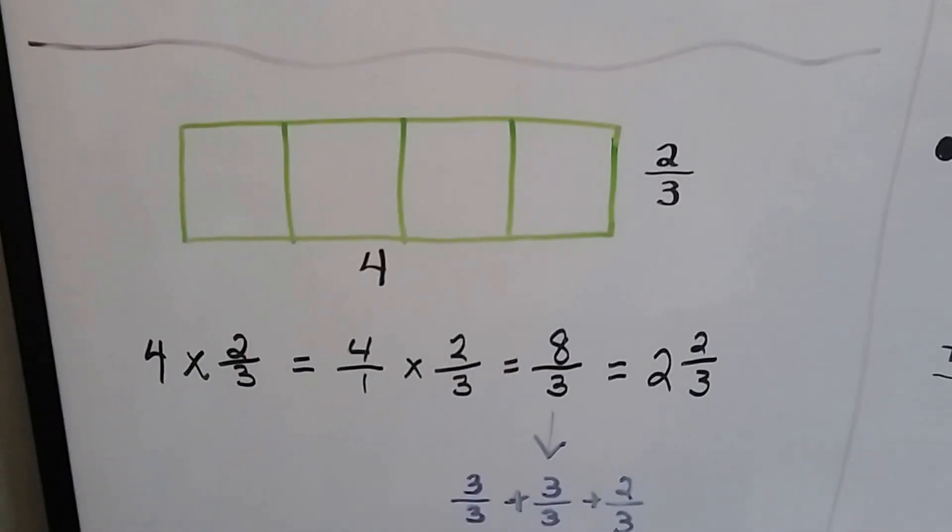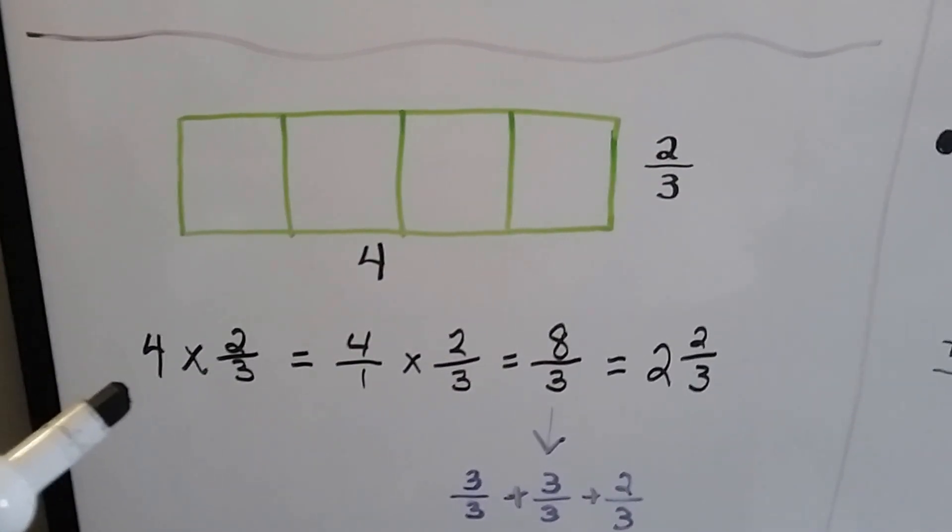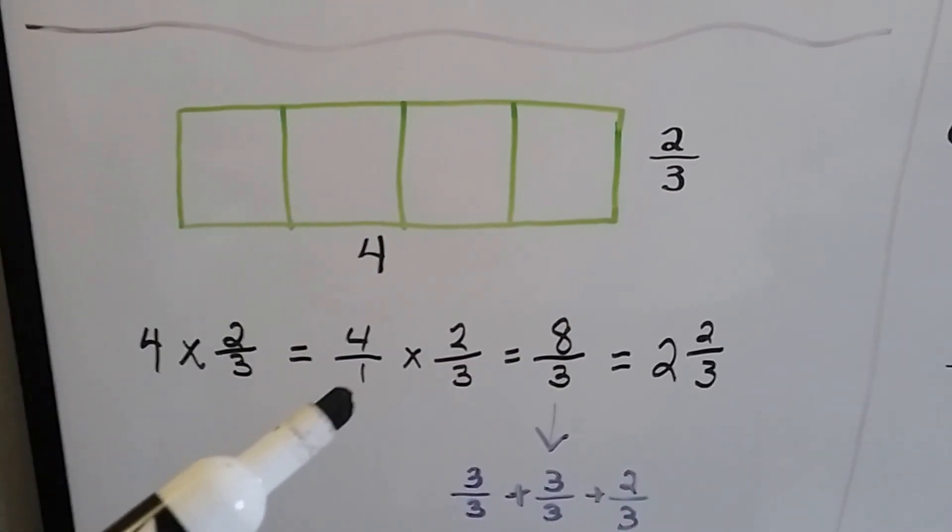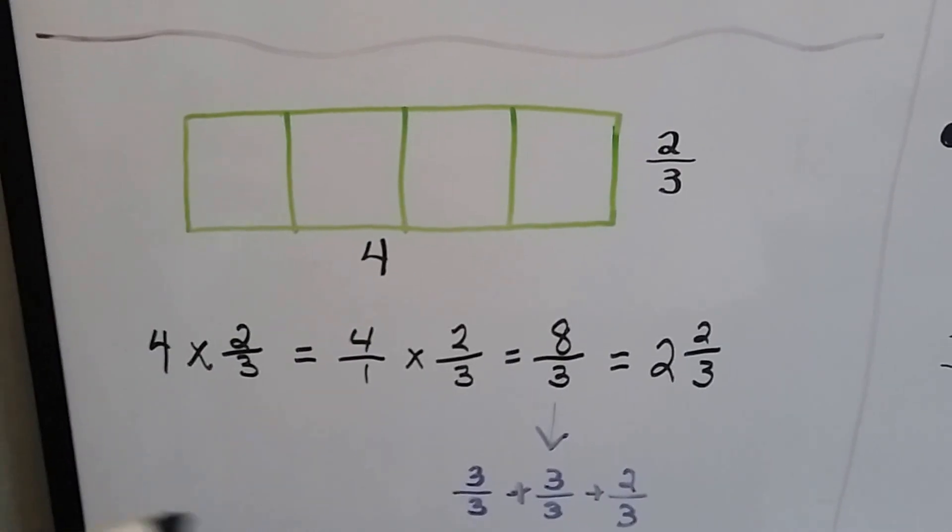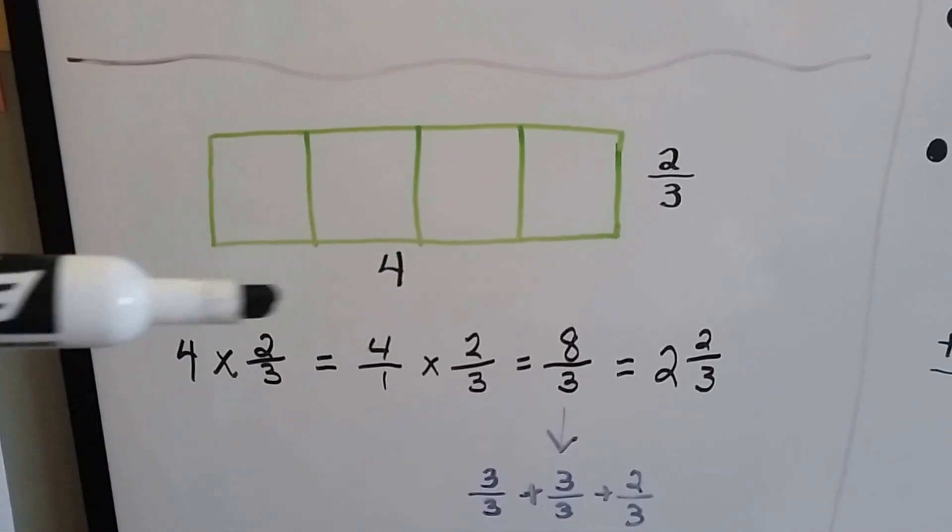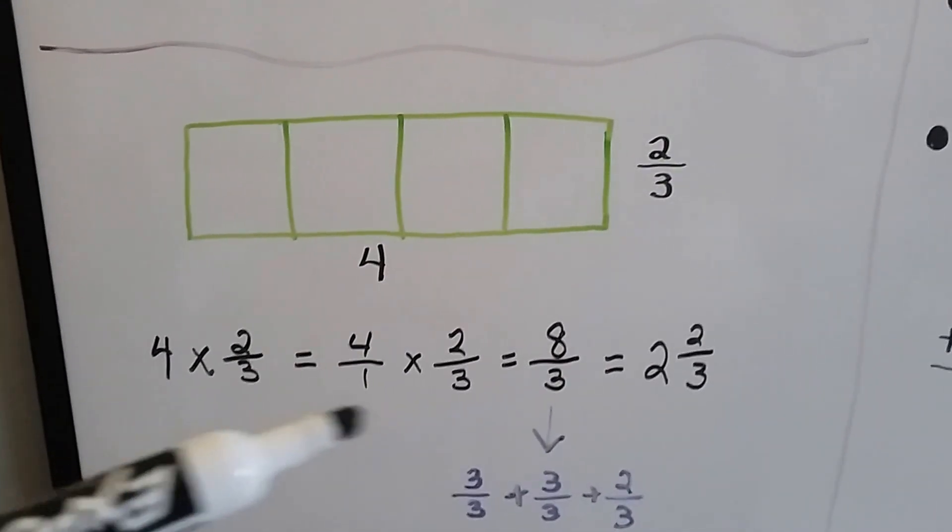Now we've got 4 times 2 thirds. We've got the 4 over a 1 as an improper fraction, and we can just multiply straight across. 4 times 2 is 8.